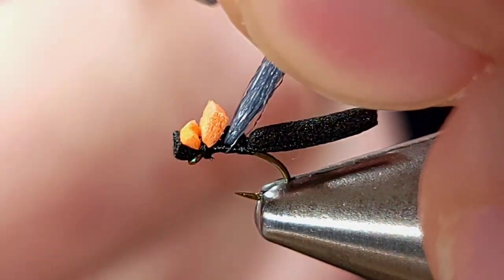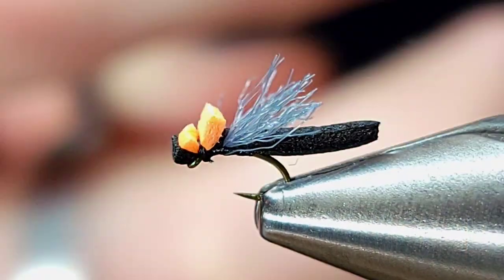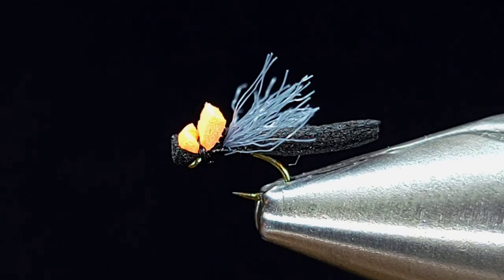Last step is to cut those wings. I'm going to make them just shorter than the tail end of this body. And there you have it.